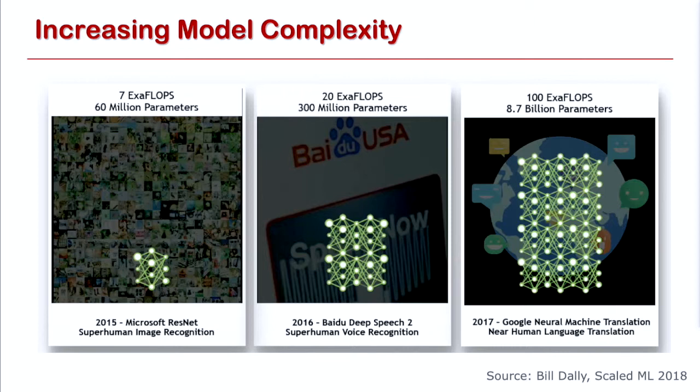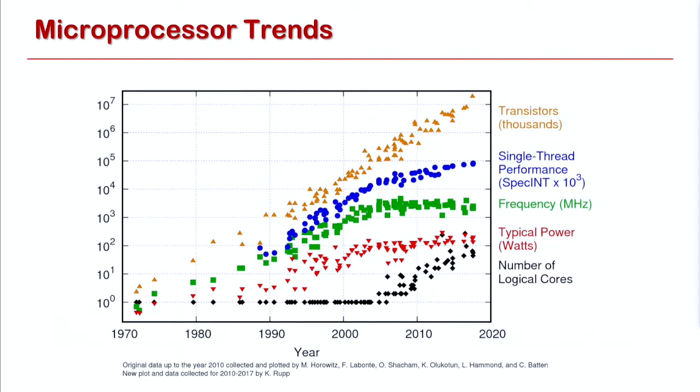There is also increasing model complexity to provide more accuracy. This shows the increasing complexity of neural network models that has increased by a couple of orders of magnitude, and the performance in terms of FLOPs necessary to train these models also increases dramatically. As models get more complex, they get more accurate. So we have this increasing complexity and sparsity and the need for bringing data processing close to linear algebra, at a time when microprocessors are slowing down fundamentally.